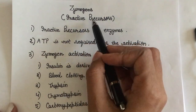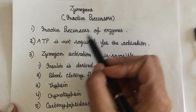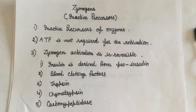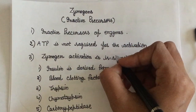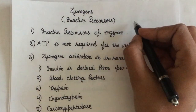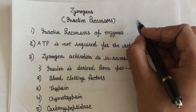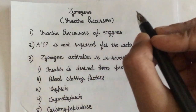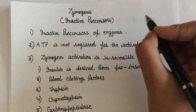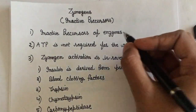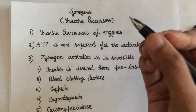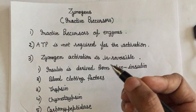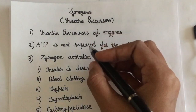Zymogens, in simple terms, are inactive precursors of active enzymes. ATP is not required for their activation. Proteins are synthesized by ribosomes, and most proteins when synthesized are in their active state — they are functional, and their functionality depends on their native conformation, that is their three-dimensional form. Enzymes are basically proteins; very few enzymes are catalytic RNAs.